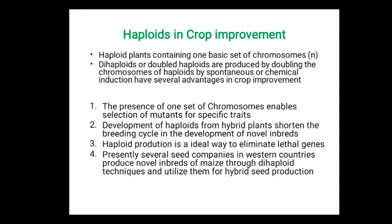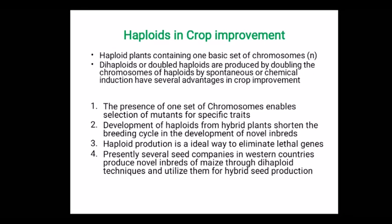These haploid and doubled haploid have several advantages in crop improvement. Four key points: the presence of one set of chromosomes enables the selection of mutants for specific traits; development of haploid from hybrid plants shortens the breeding cycle; haploid production is an ideal way to eliminate lethal genes. Several seed companies in western countries use this technique to develop doubled haploids for hybrid seed development.